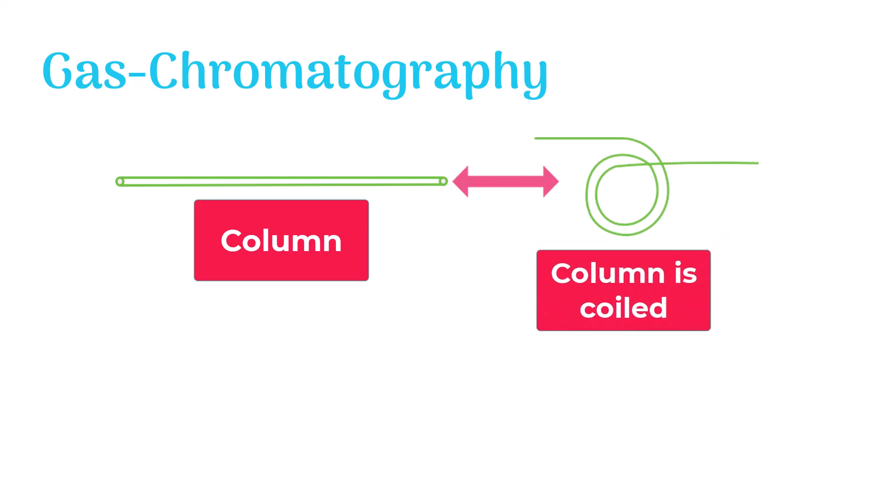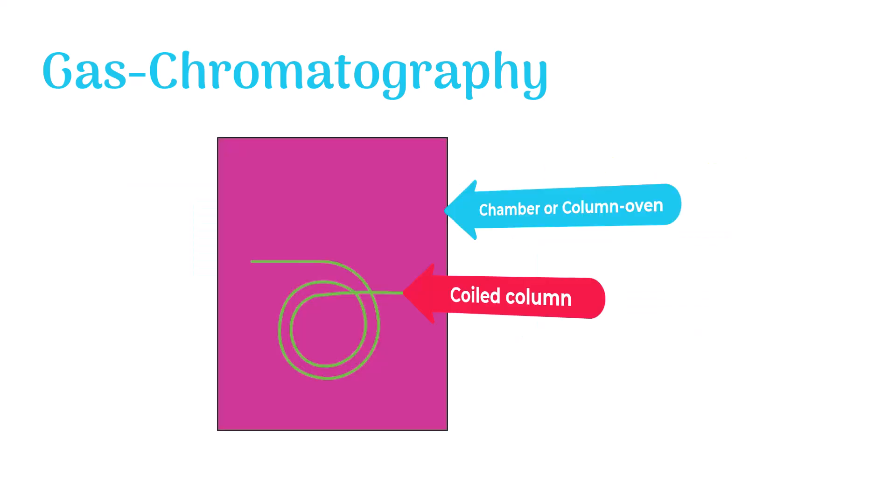In Gas Chromatography, the separation occurs in a long column. The column used in Gas Chromatography is longer in size and coiled. The column is coiled to make it fit inside a container called chamber or column oven.